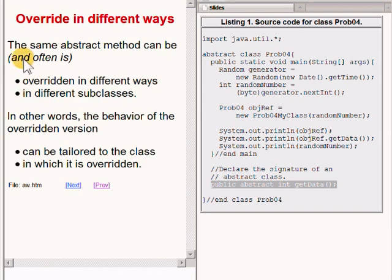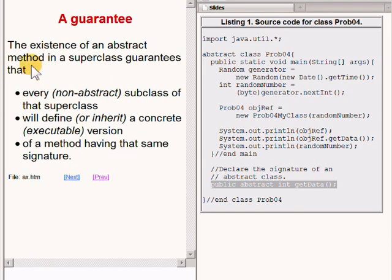An abstract method must be overridden in a subclass in order to be useful. The same abstract method can be, and often is, overridden in different ways in different subclasses. In other words, the behavior of the overridden version can be tailored to the class in which it is overridden.